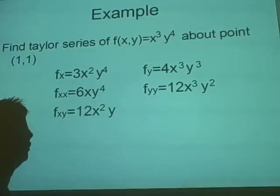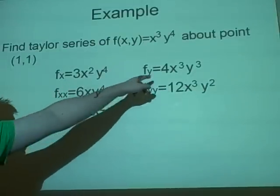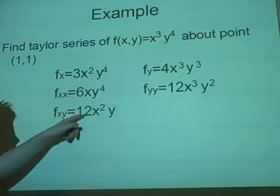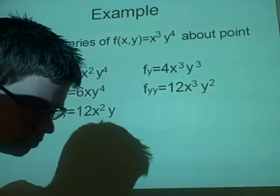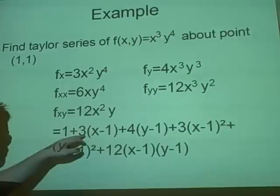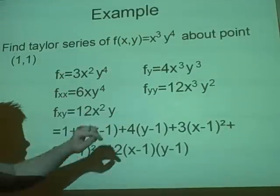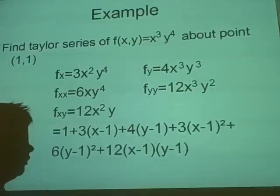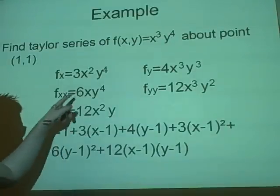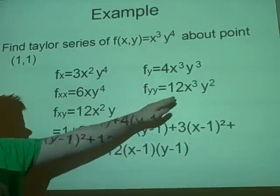Now we simply have to put in our values, which are 1, 1. So we have 1, 1, 1, 1, 1, 1, 1, 1. So we have 3, 6, 12, 4, 12. And we put this into our formula. Now we have the 1, we have the 3, we have the x - 1, 4 times the y - 1. We have a half times this. And then we have just the normal at the end, 12 times this.